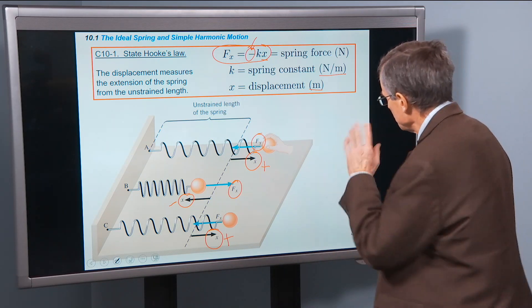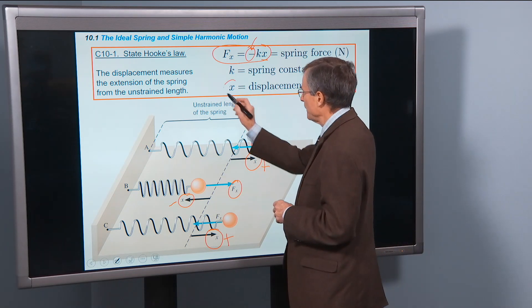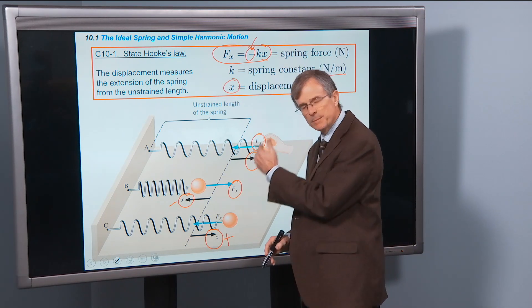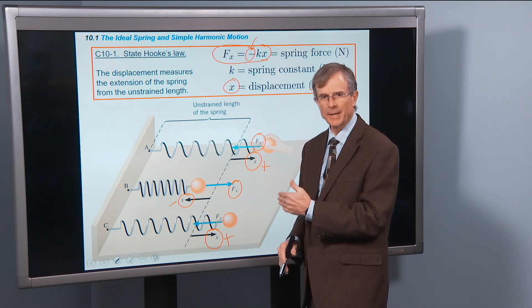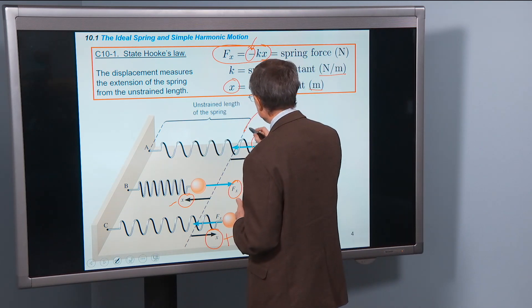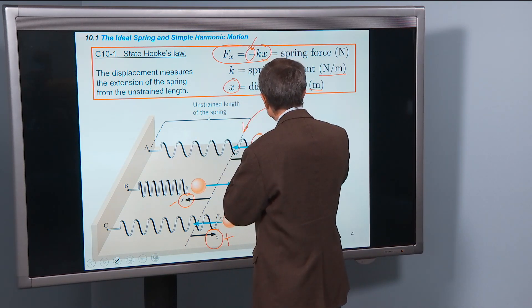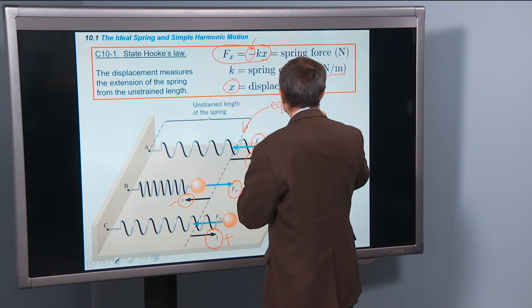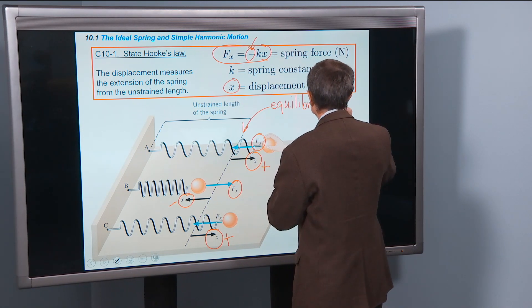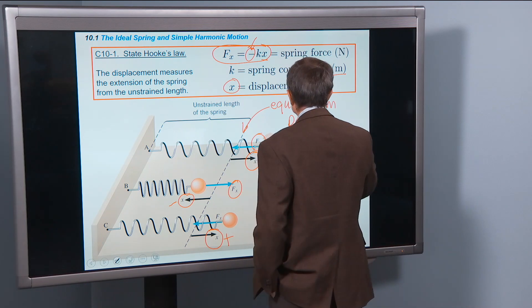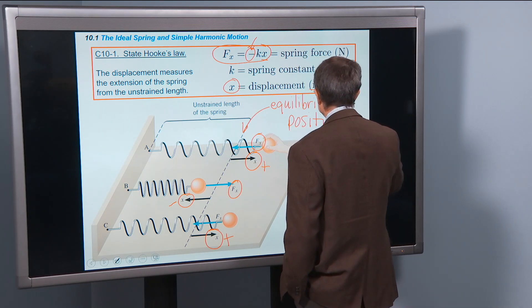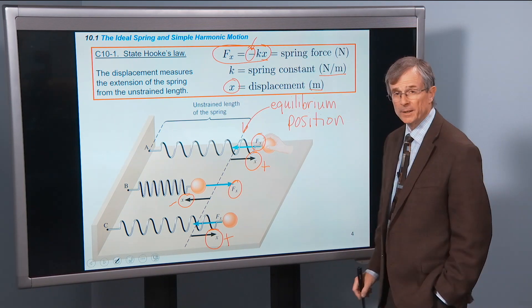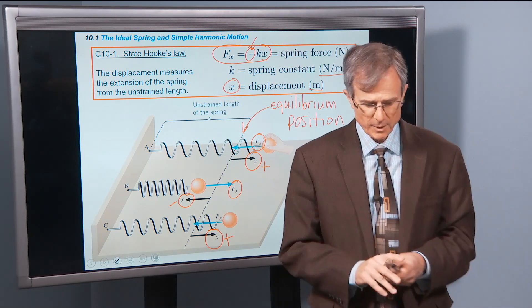And the displacement, this x, is special in the sense that you have to measure it from the unstrained length. This is called the equilibrium position of the end of the spring, where it's not stretched and not compressed.